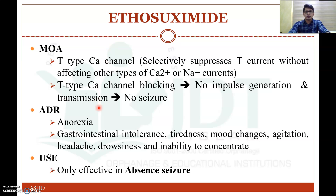Coming to the adverse drug reactions, ethosuximide may produce anorexia and gastrointestinal intolerance, tiredness, mood changes, agitation, headache, drowsiness and inability to concentrate. These are the important adverse drug reactions of ethosuximide.